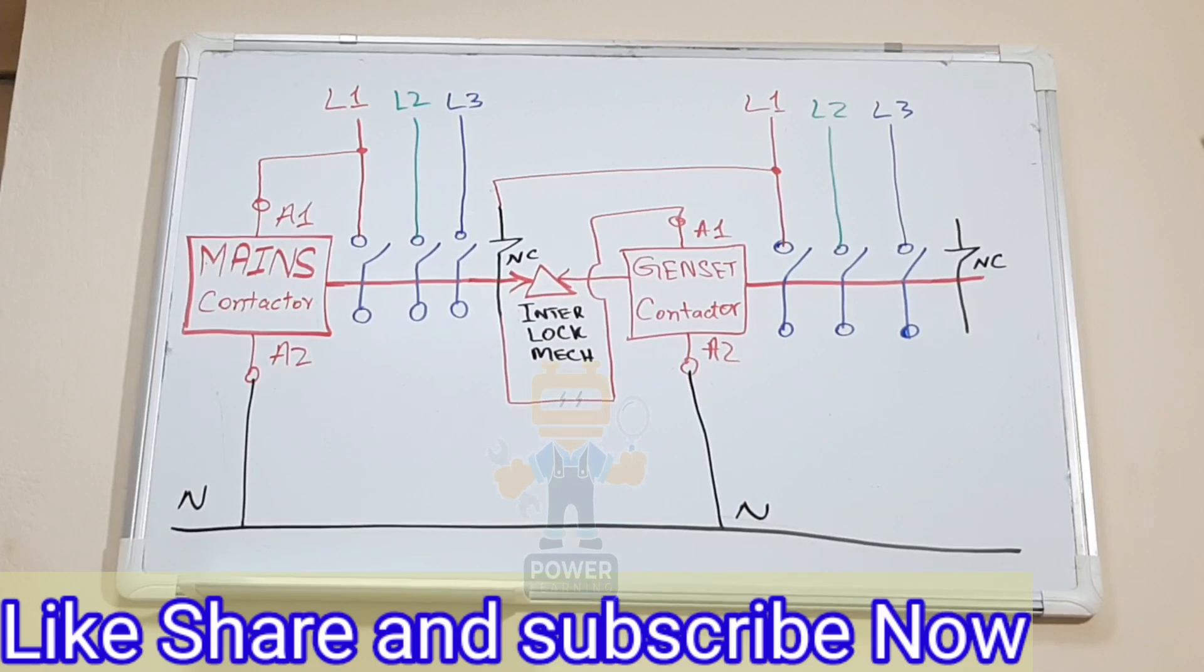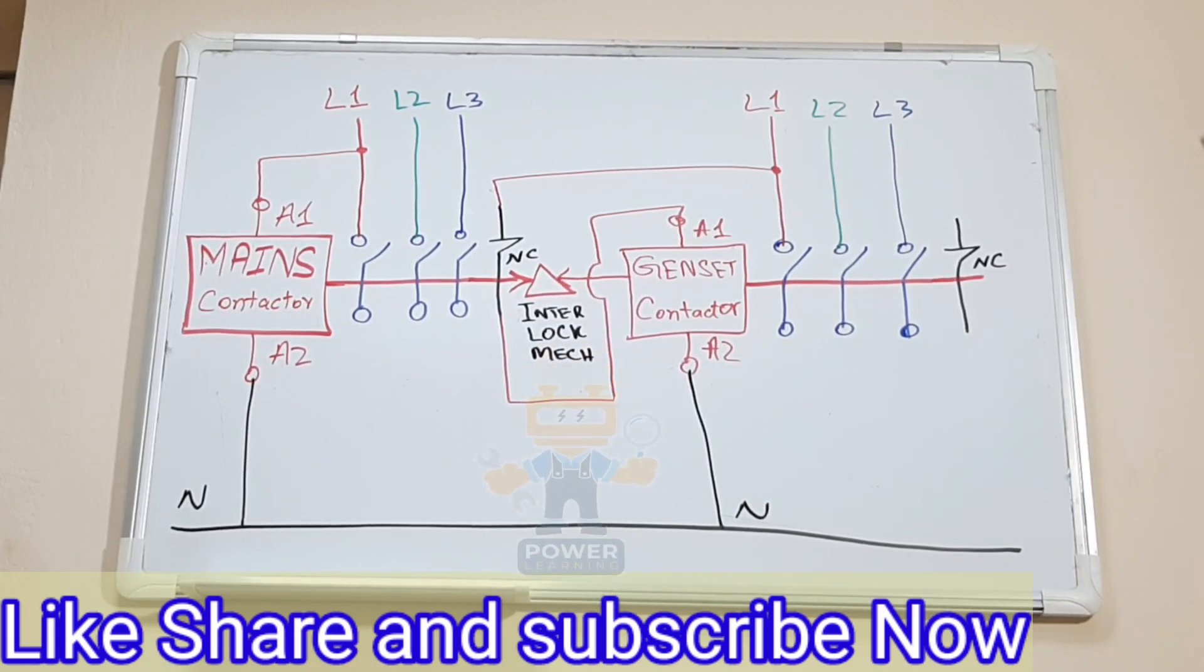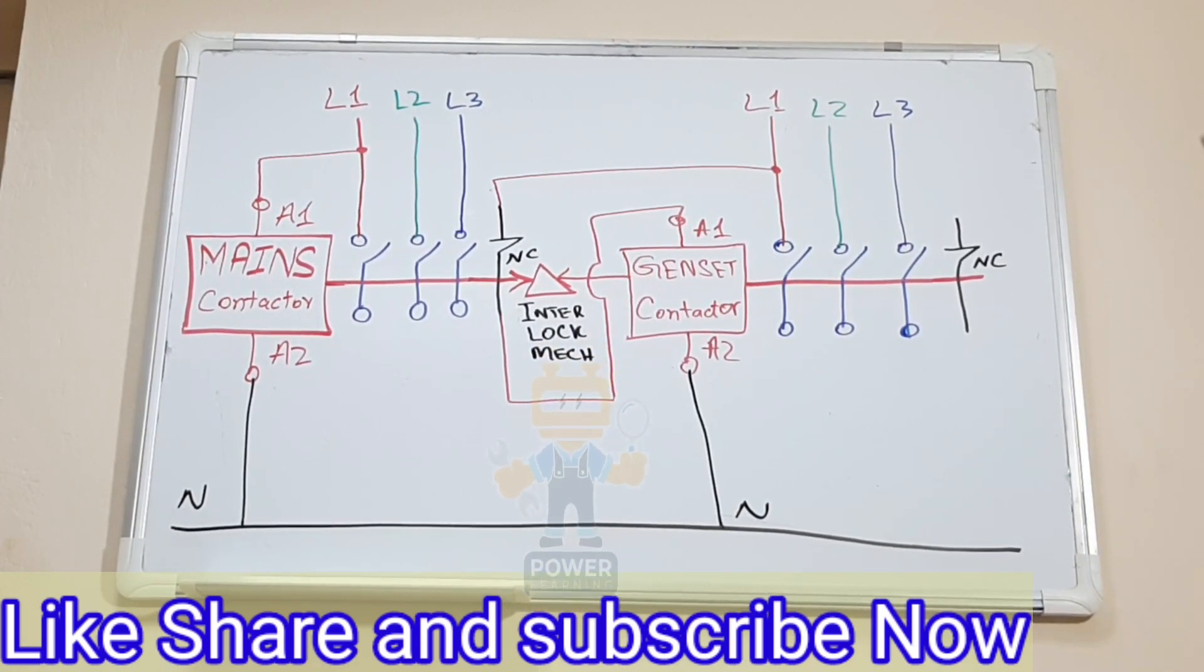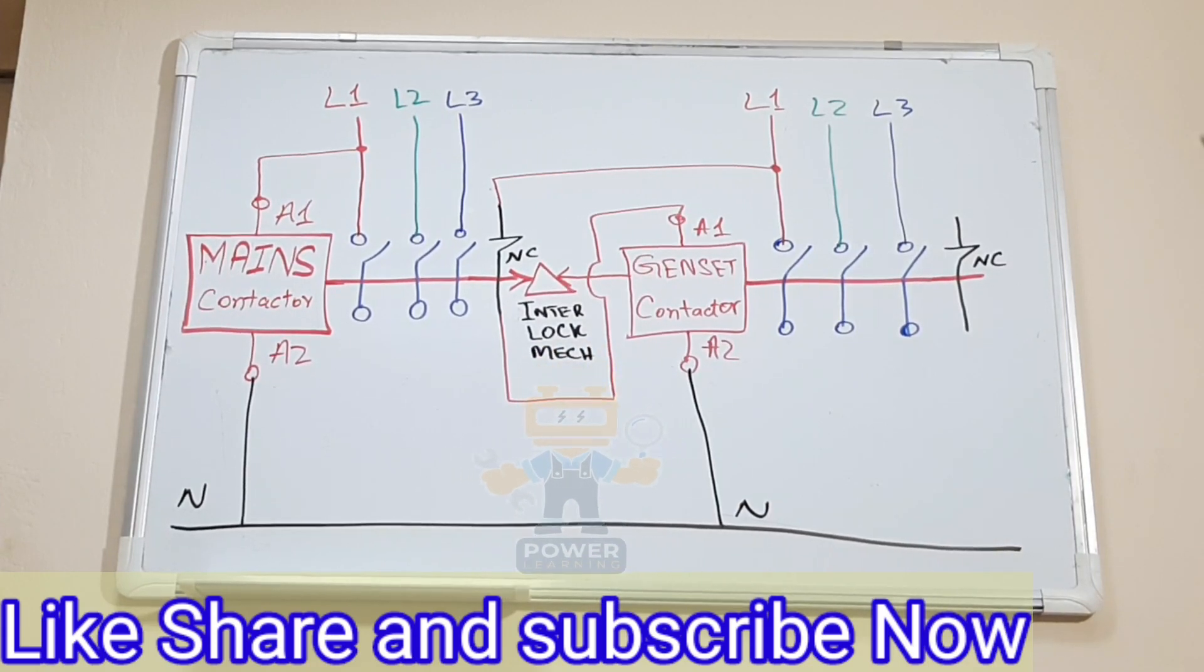Then connect to A1 of the genset. So this is our ATS complete. Now I will show you the remaining items, but if you will connect like this your ATS can work. I will show you now the power diagram.